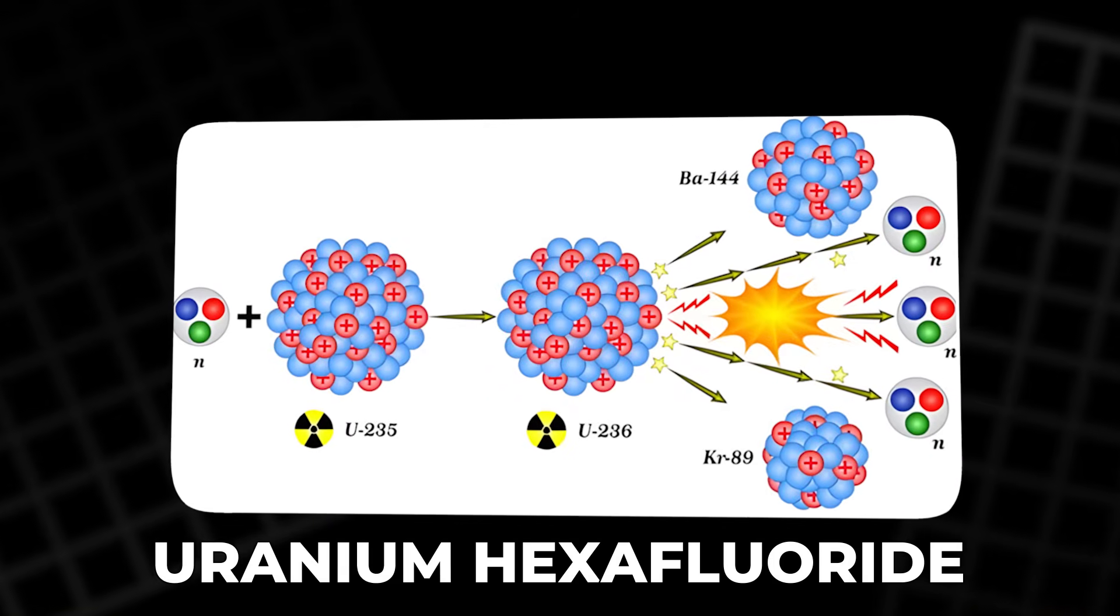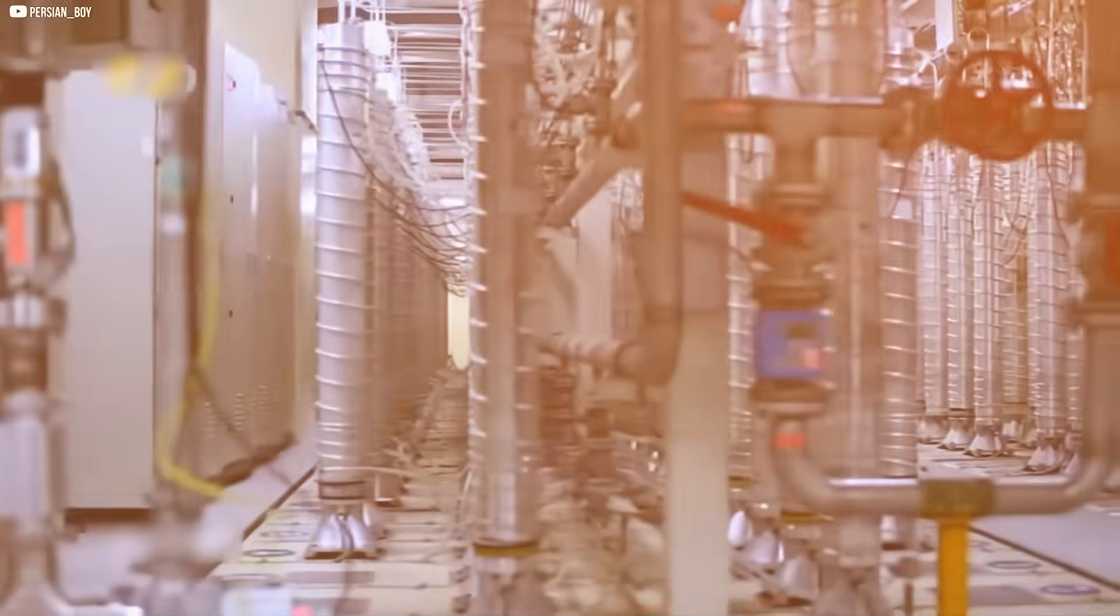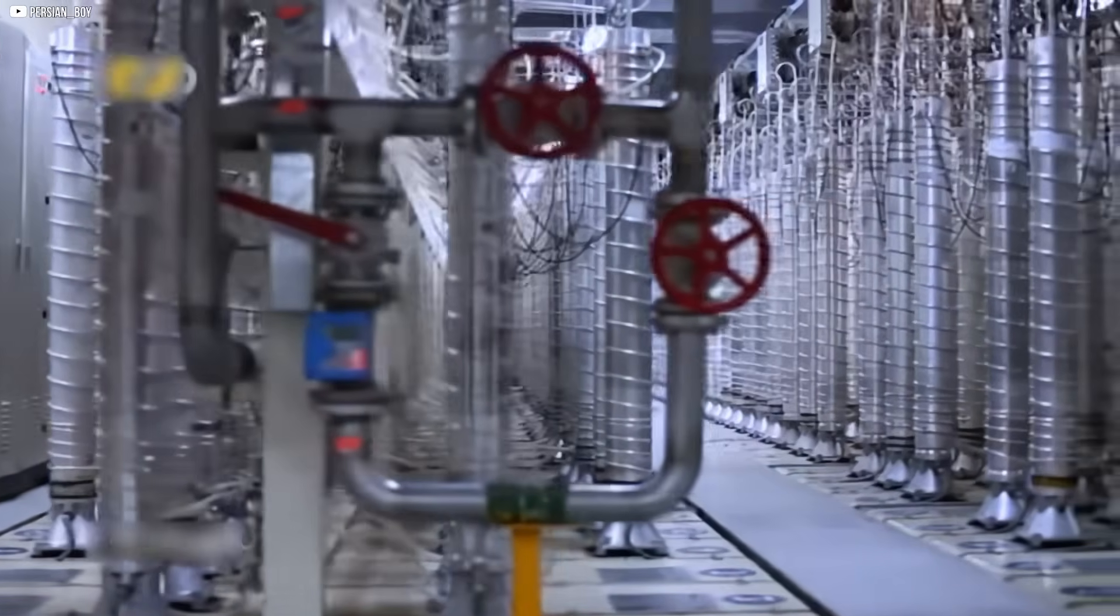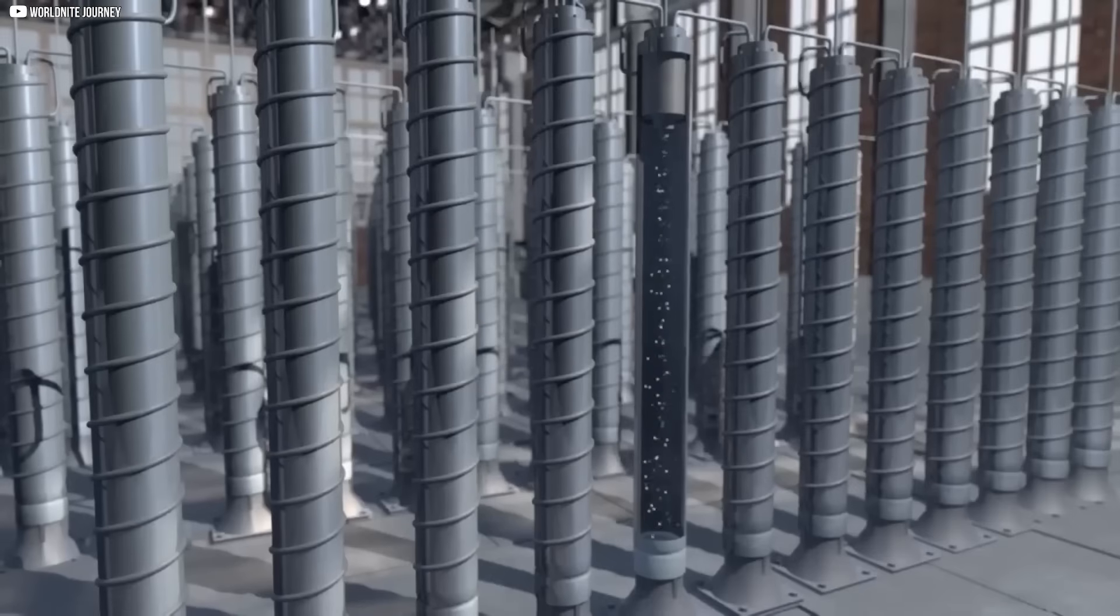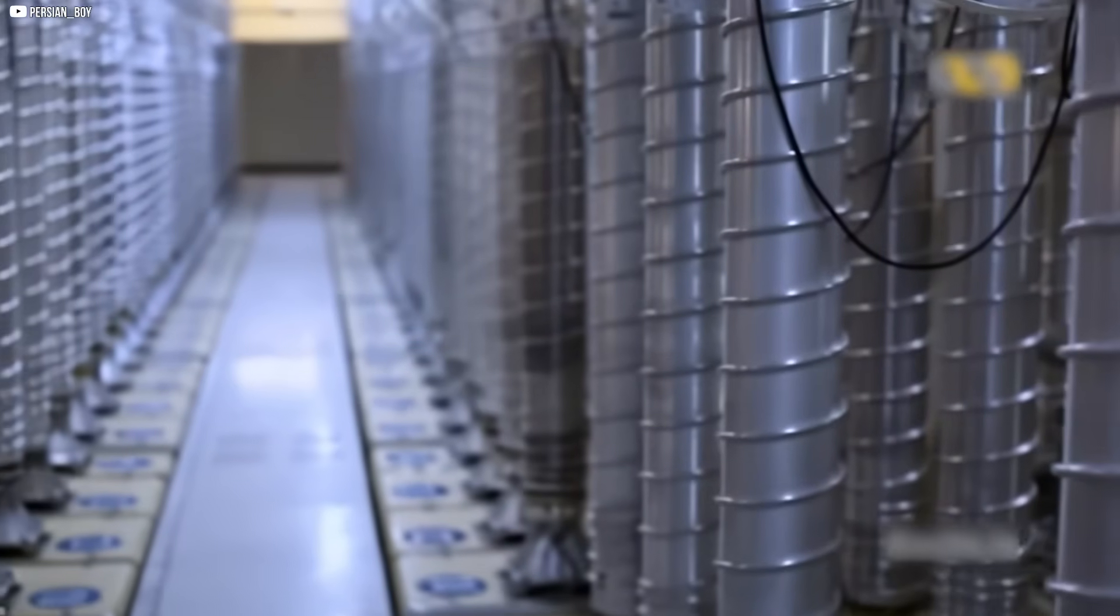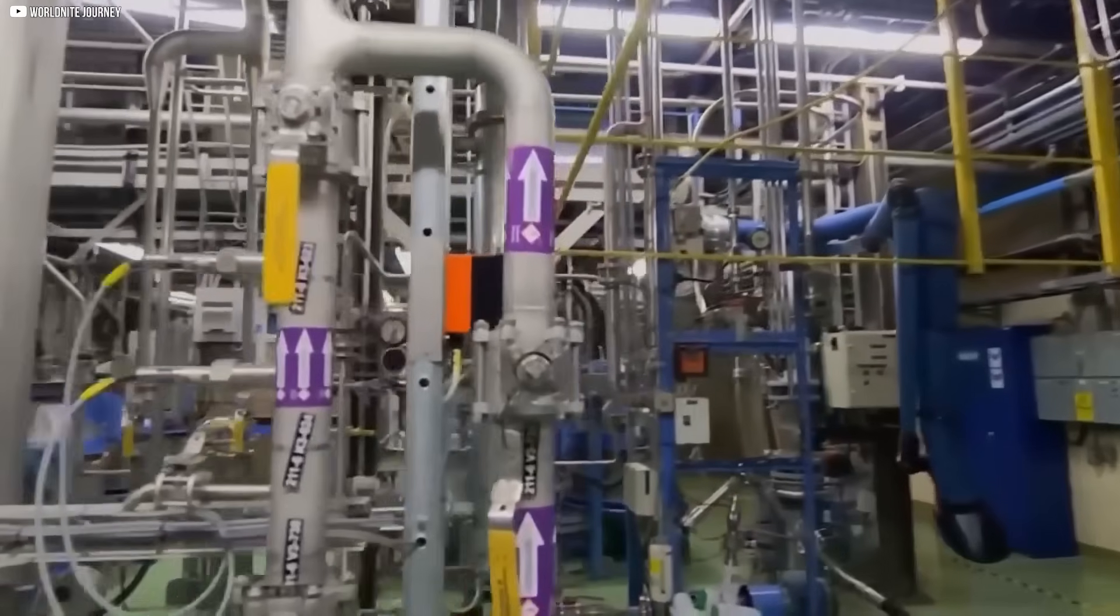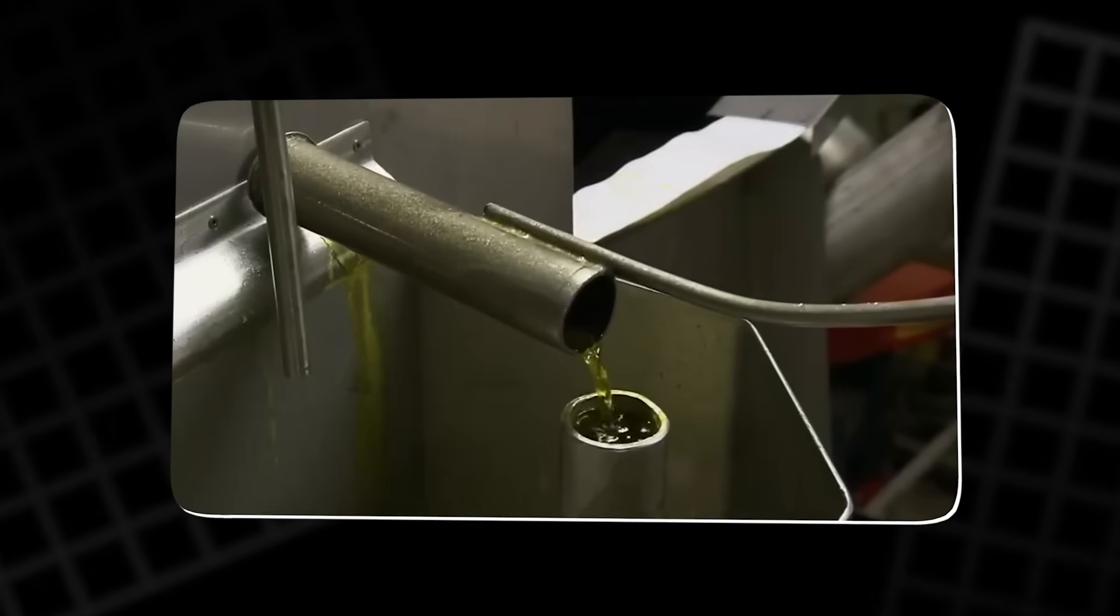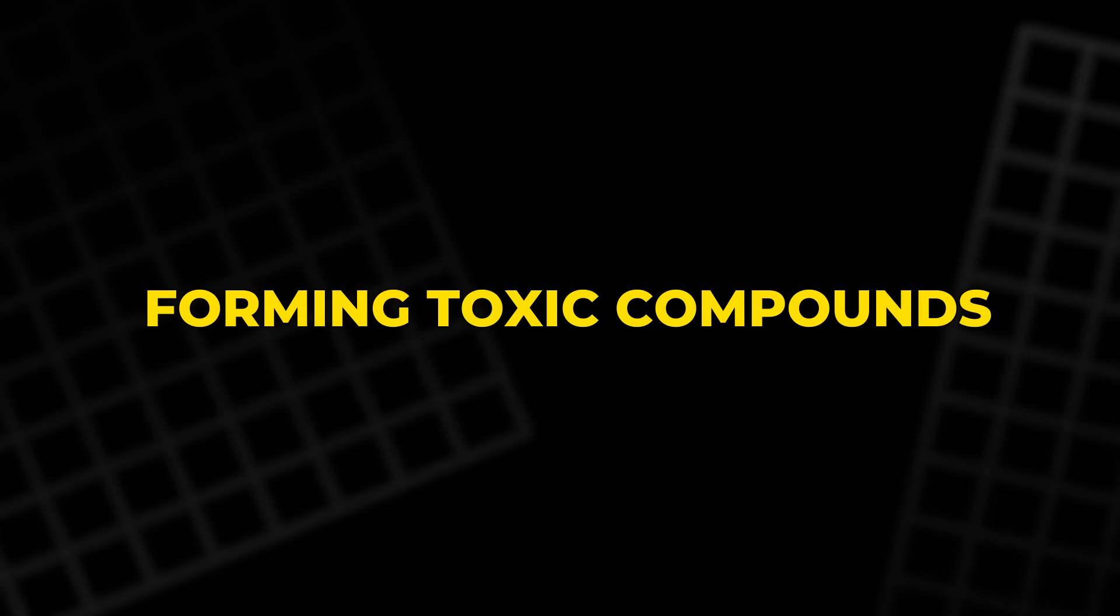Uranium hexafluoride is a volatile compound, which makes it ideal for enrichment since it can easily be turned into gas at relatively low temperatures, around 56 degrees. The gas is then cooled and stored in cylindrical steel containers, which are designed to handle the highly corrosive nature of UF6. Safety is paramount in conversion plants, as uranium hexafluoride reacts violently with water, forming toxic compounds.